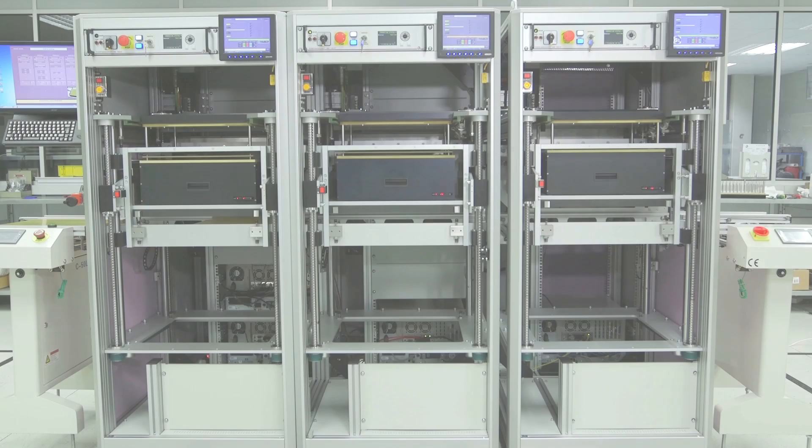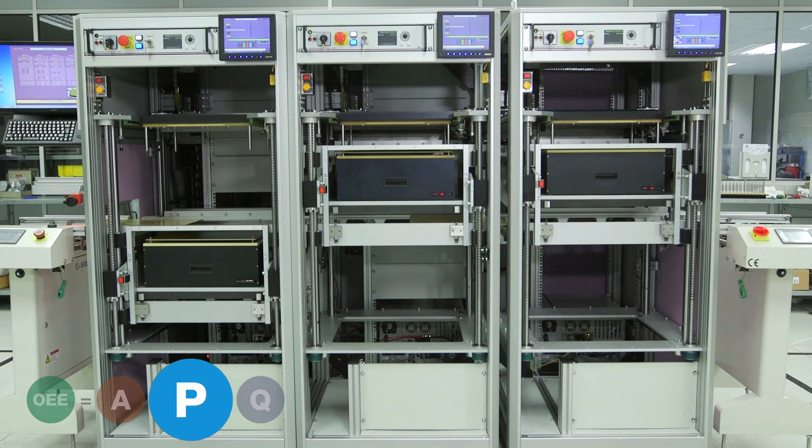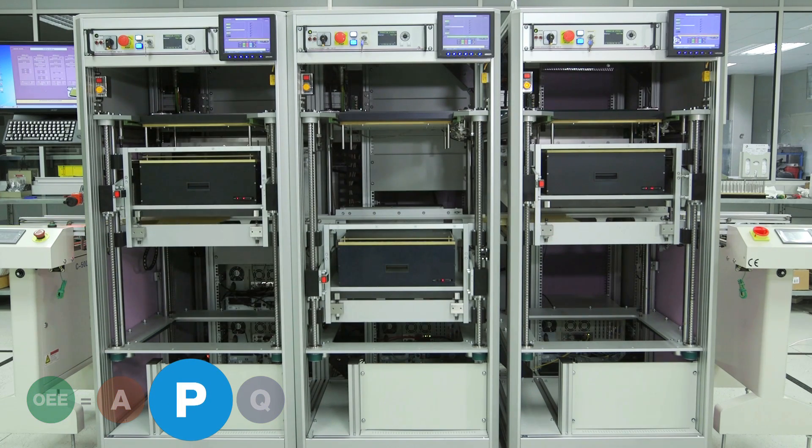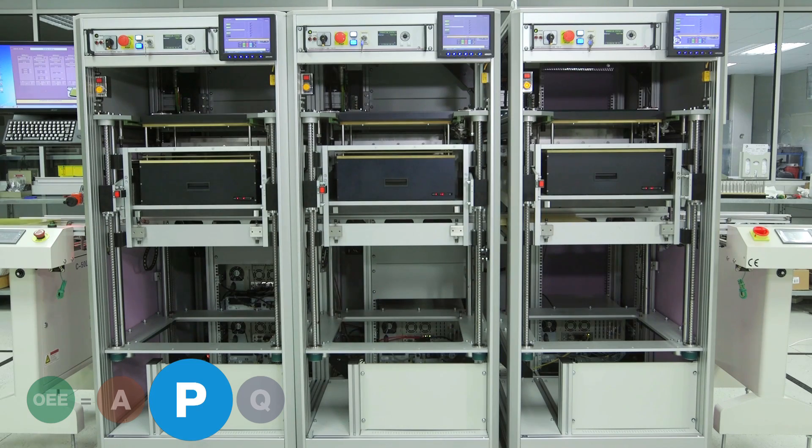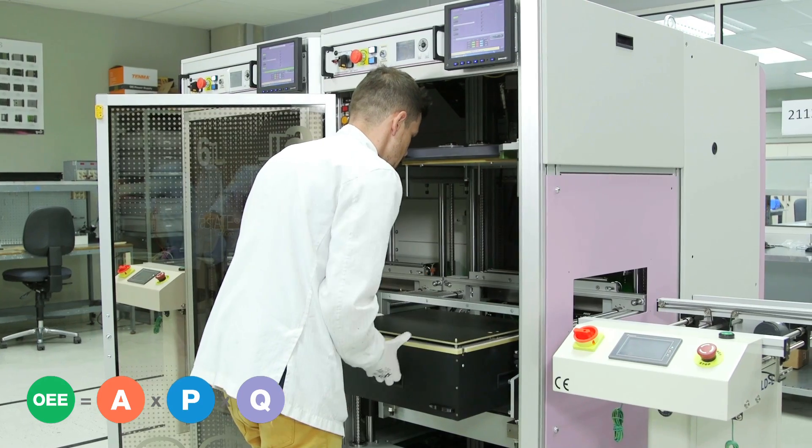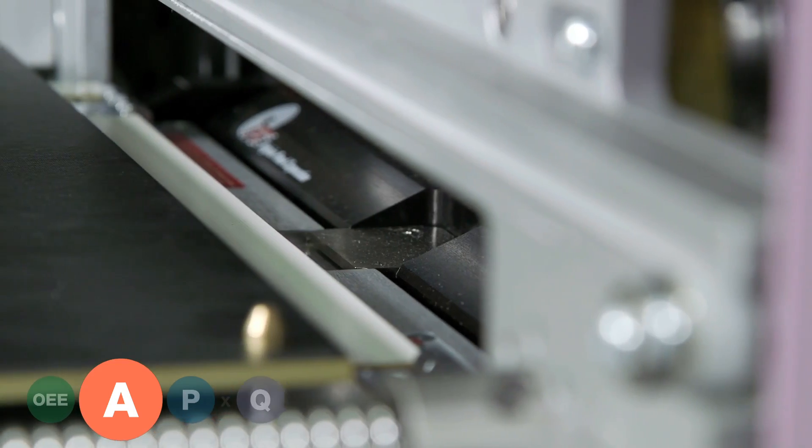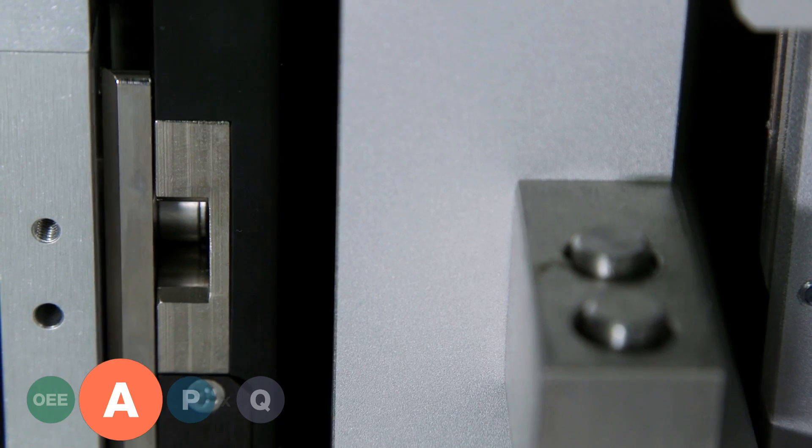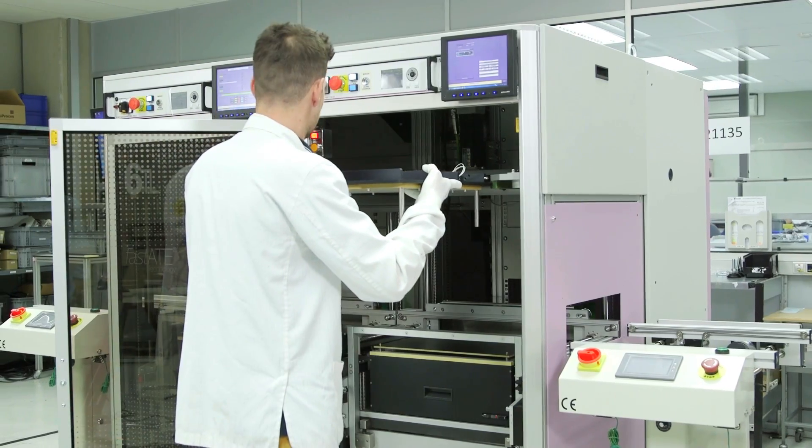To achieve a high overall equipment effectiveness or OEE, 6TL test handlers will operate in a coordinated manner to reach the highest uptime. Setting up a FastATE handler for testing other products is a fast operation, with automatic engagement mechanisms for both the bed of needles and the pusher plate.